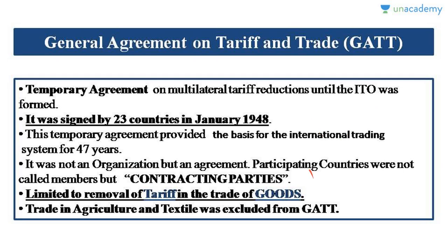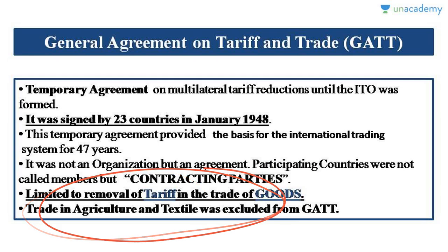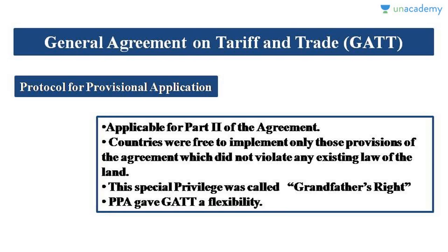The scope of GATT was limited to trade in goods and just tariff barriers — it excluded trade in agriculture and textile. GATT was provisionally applied, meaning not all parts were applied together at once. If India signed GATT, India would apply only those provisions which don't conflict with existing laws of the land. This is called the Protocol for Provisional Application, and this right of a country was called the grandfather's right.